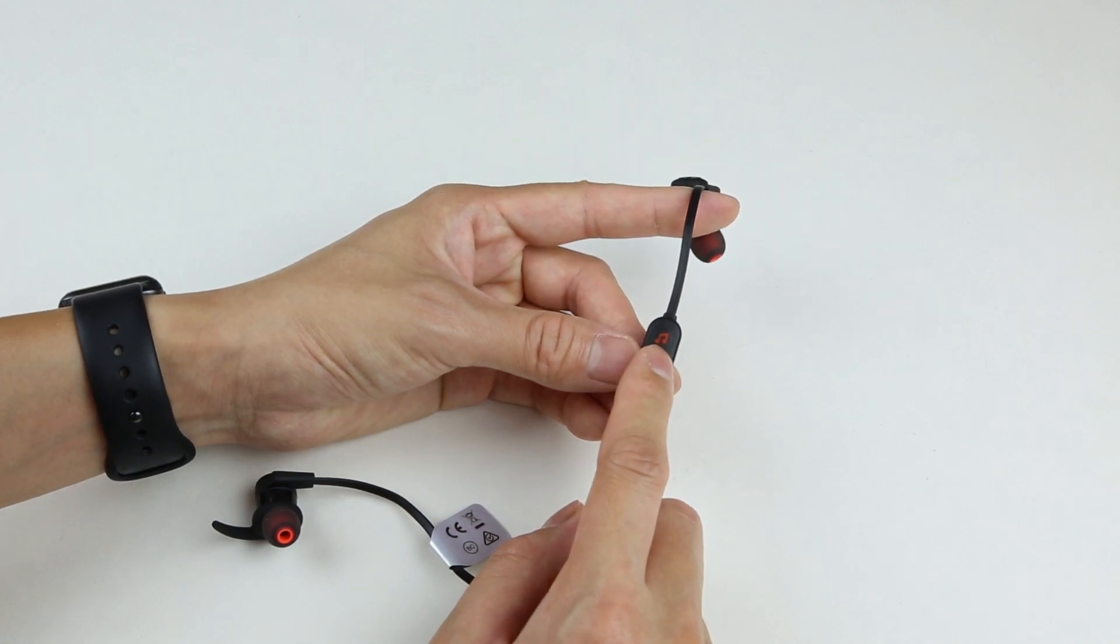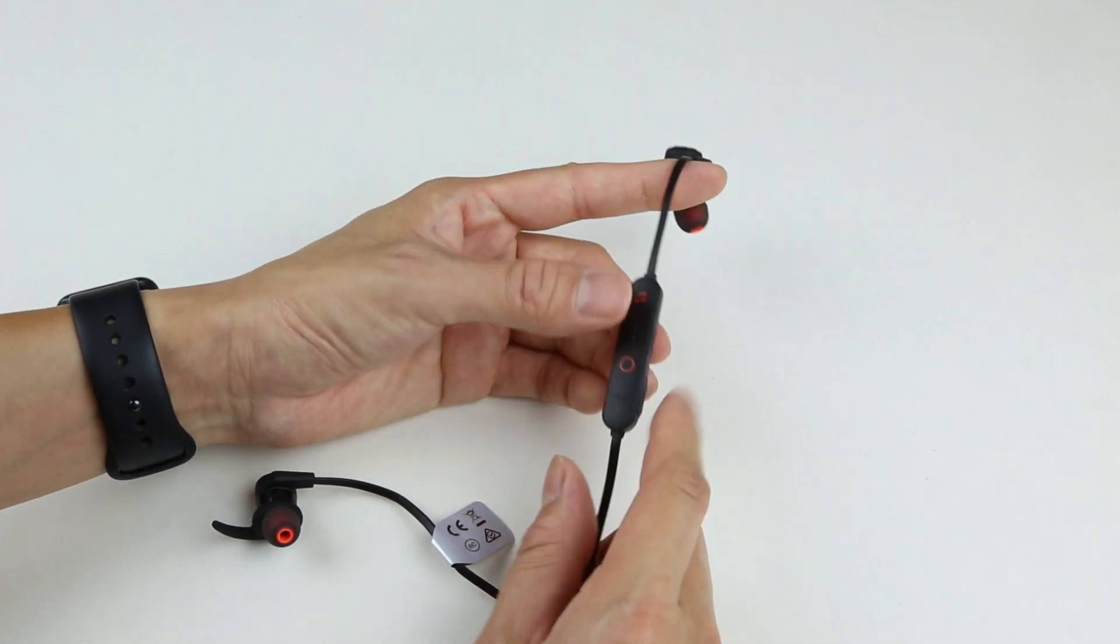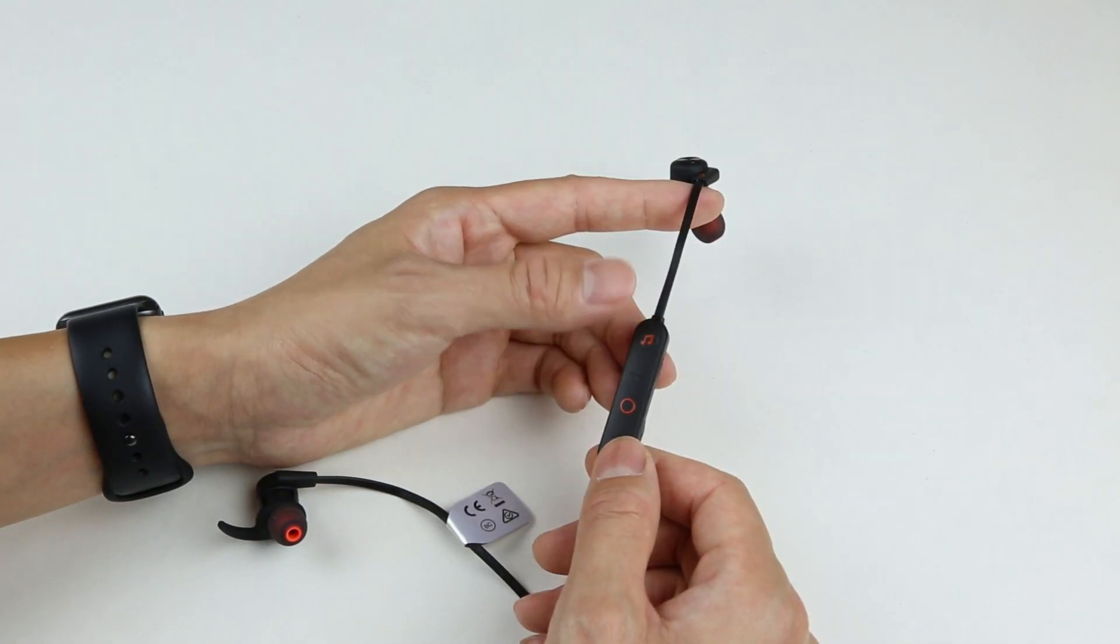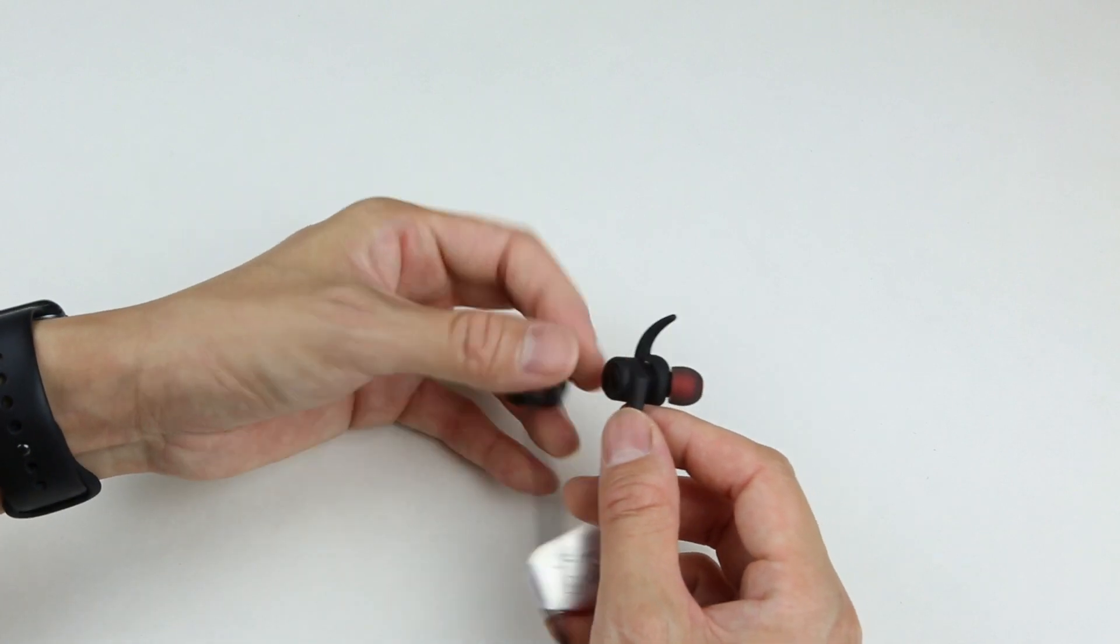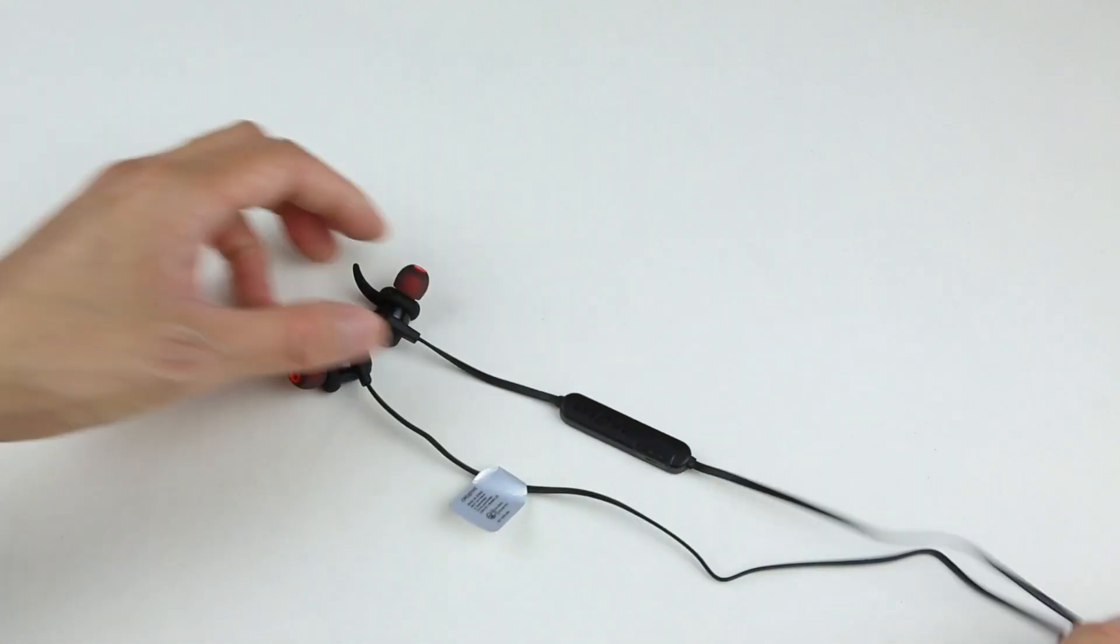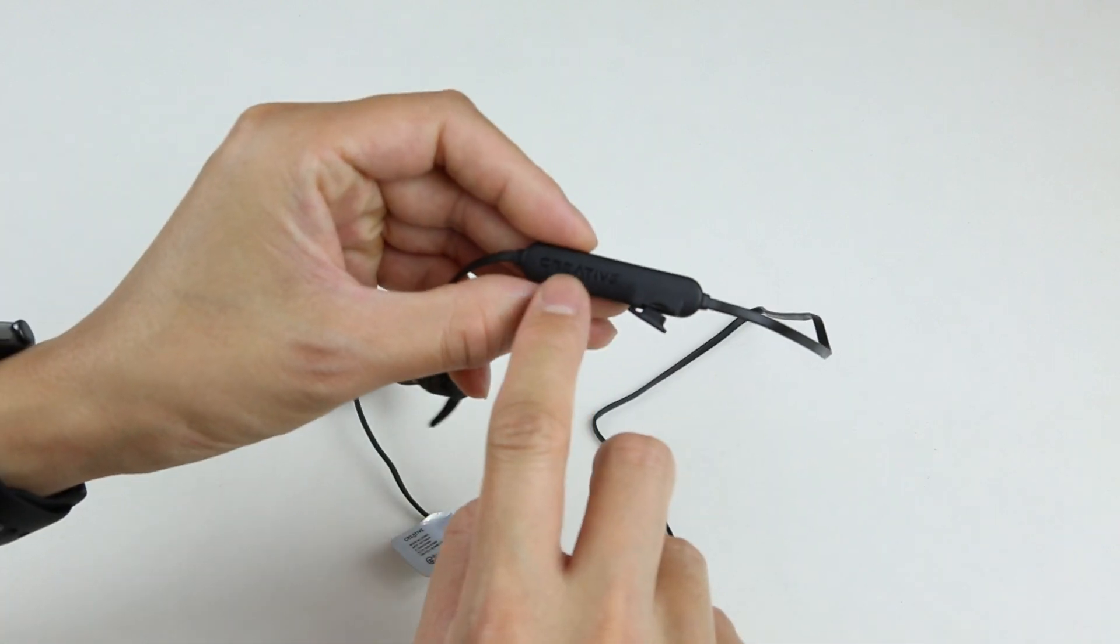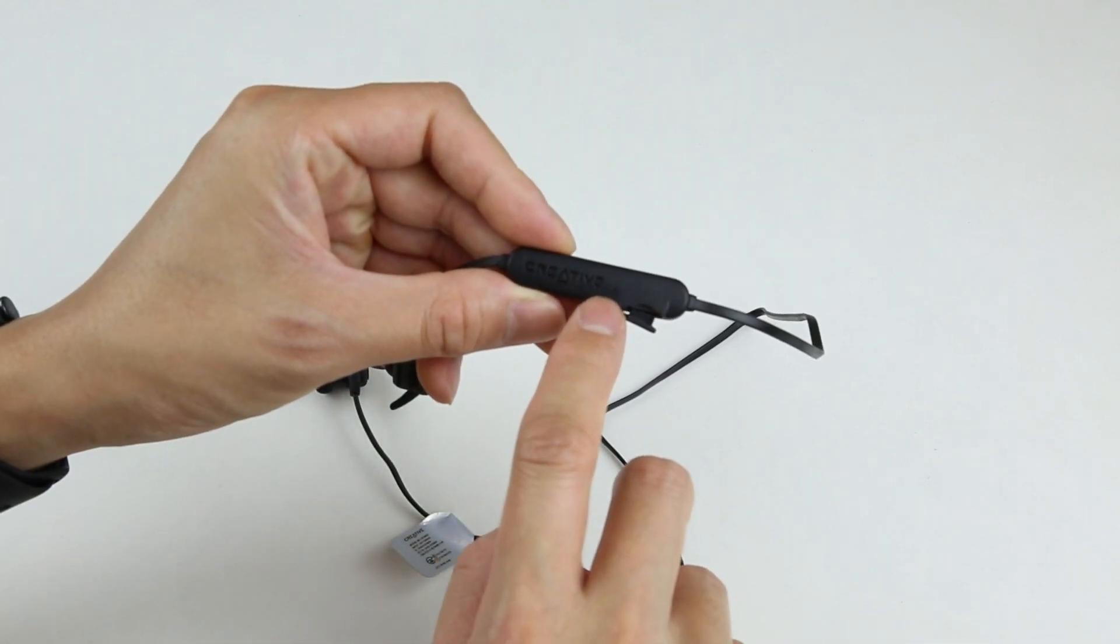The Outlier One Plus has a 4GB of onboard memory living right inside of this little controller. You can easily load up your MP3 files from your computer and just use these earbuds to play your music without using your phone. On the side of this controller we can see the micro USB charging port, and on the back we can see the creative logo and a microphone hole.